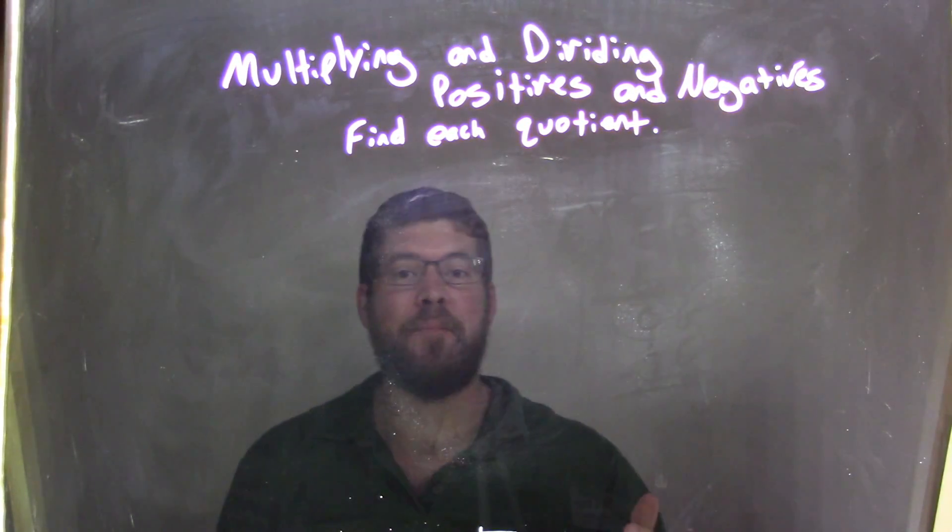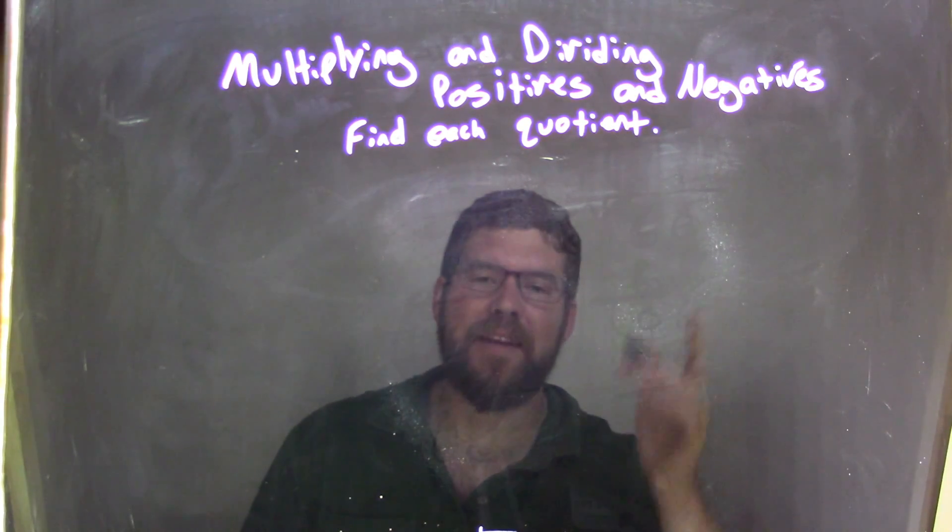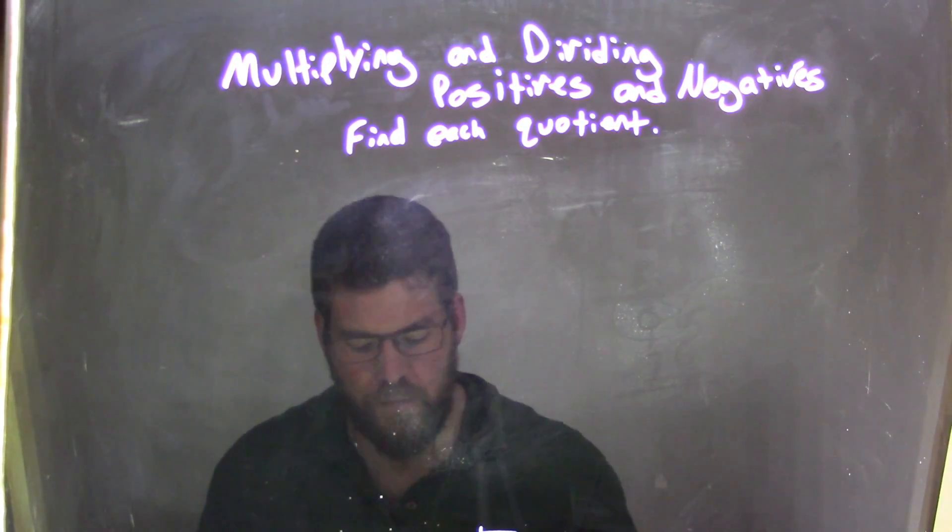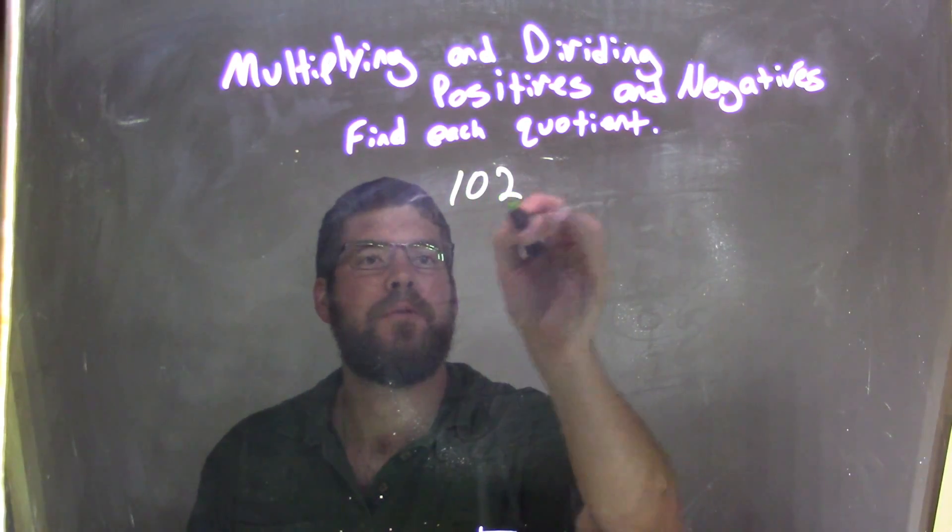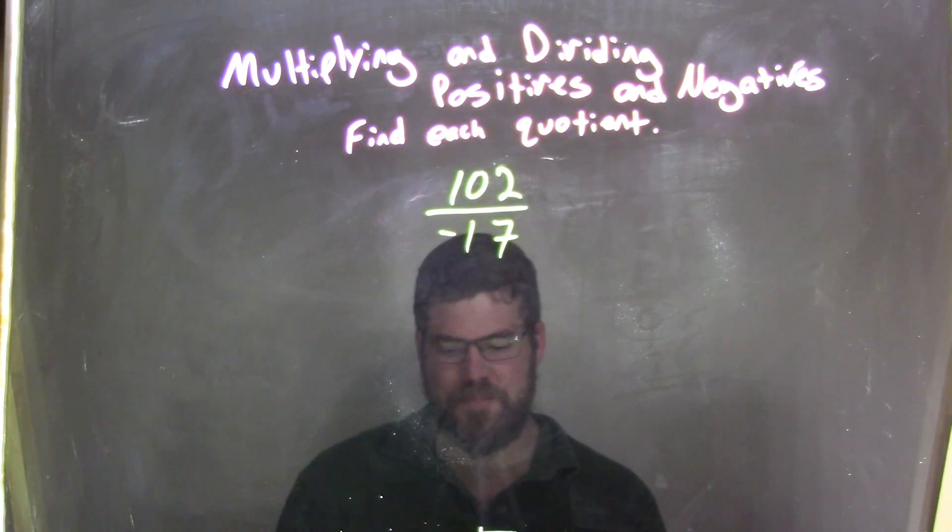Hi, I'm Sean Gannon, and this is Minute Math. Today we're going to learn about multiplying and dividing positives and negatives, and we want to find each quotient. So if I was given this quotient, 102 over negative 17...